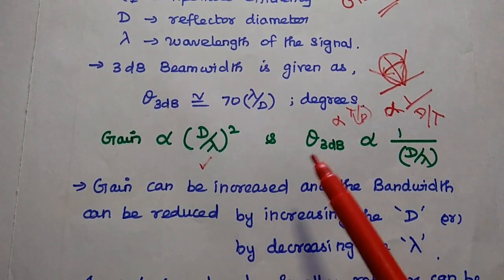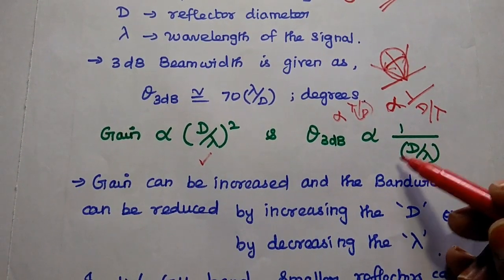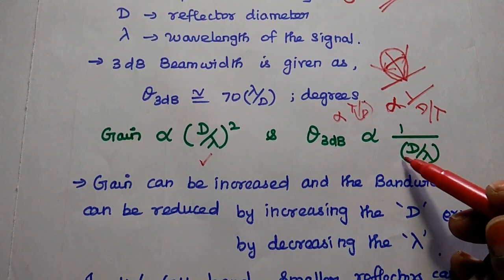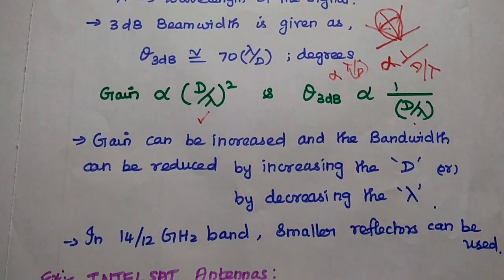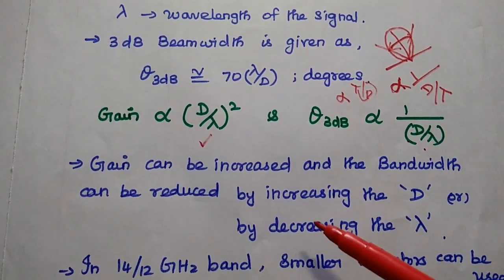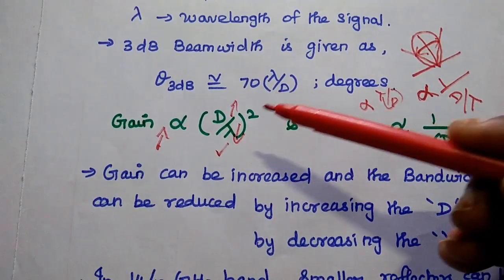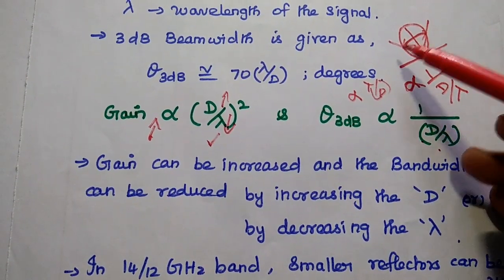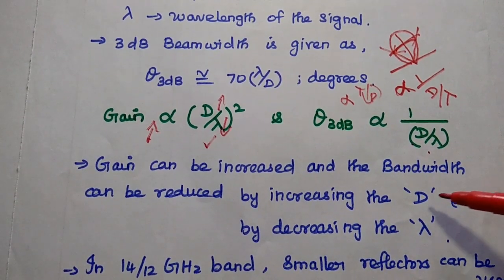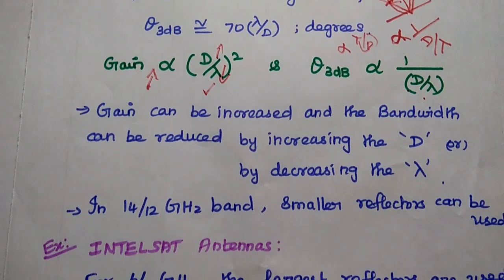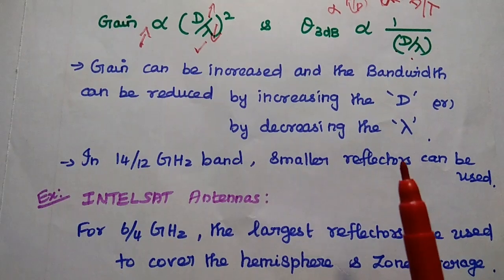Both gain and beamwidth depend on the ratio d/λ, where d is the diameter of the reflector and λ is the wavelength. We can increase the gain by increasing the diameter or by decreasing the wavelength. Similarly, the beamwidth can be reduced by increasing the diameter or decreasing λ. This is a very important design consideration in the antenna subsystem.